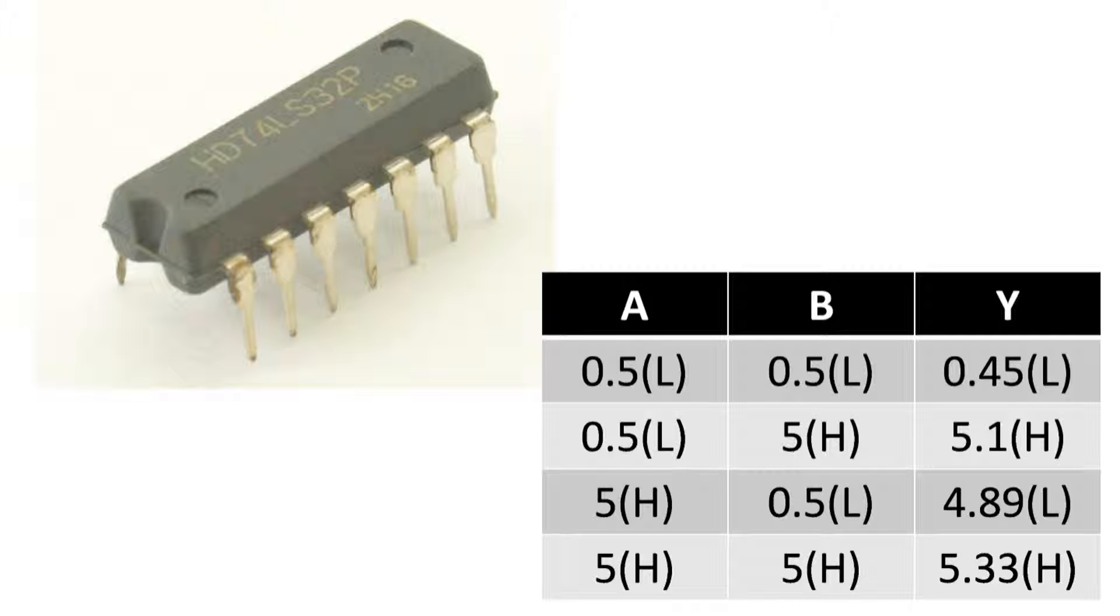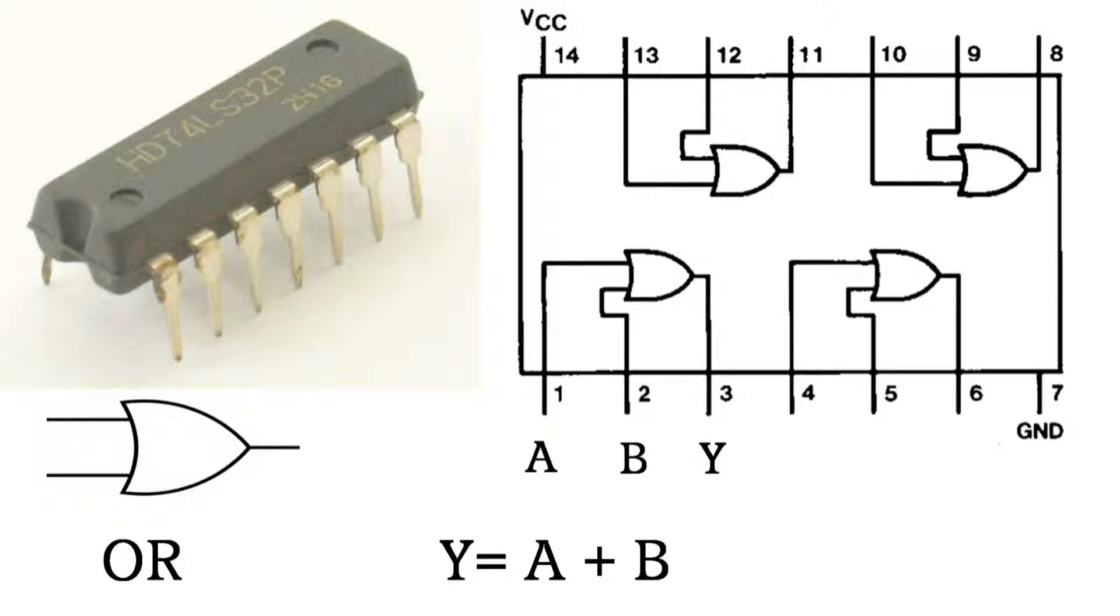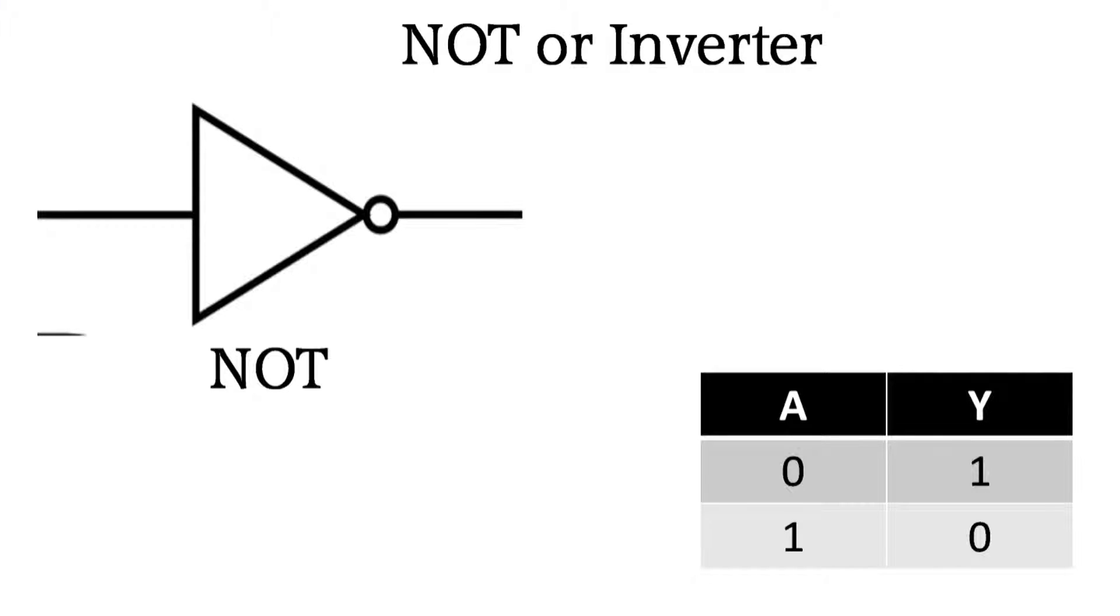So we get 1 if one of the inputs is 1 - this is an OR gate. In binary system, OR operation is represented by plus sign. Result is 1 if one of the values is 1. So output is equal to A or B - output is 1 when any of the values is 1.